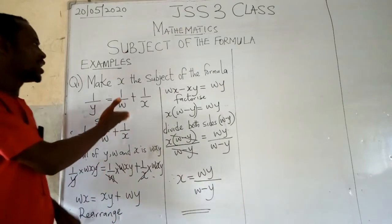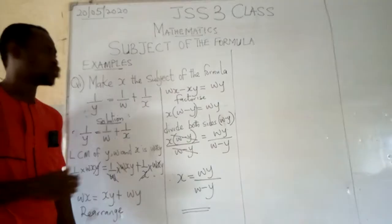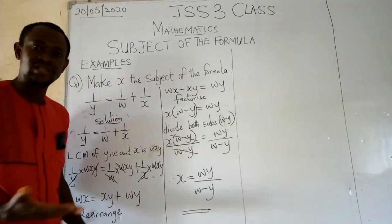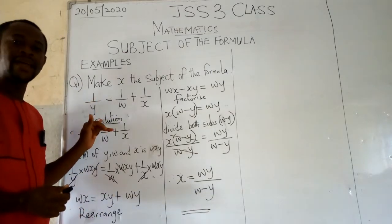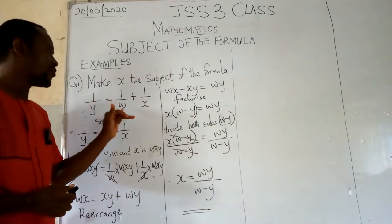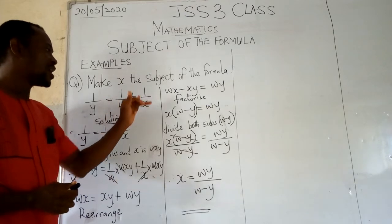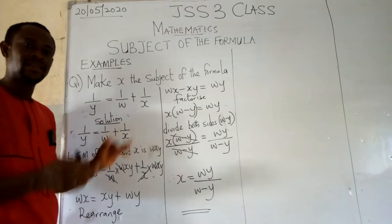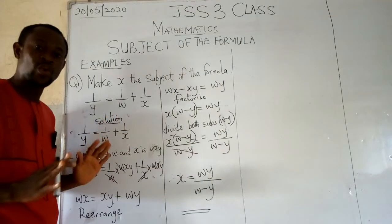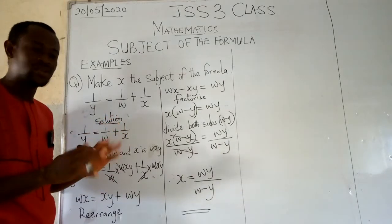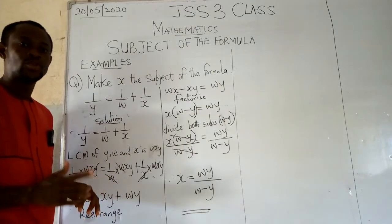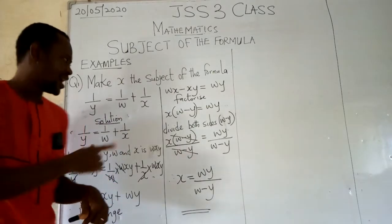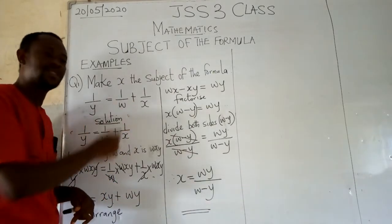This morning we have a question here and we are asked to make x the subject of the formula where we have 1 over y equals 1 over w plus 1 over x. This has nothing to do with square, this has nothing to do with square root. If you look at it, everything is purely fractions. For us to achieve this and what we have here now is plus.